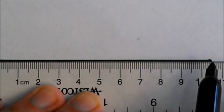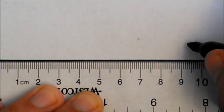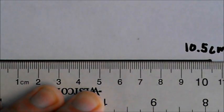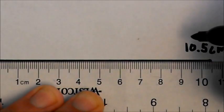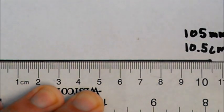One, five lines, that's right there. That's 10.5. How many millimeters is that? 105 millimeters.